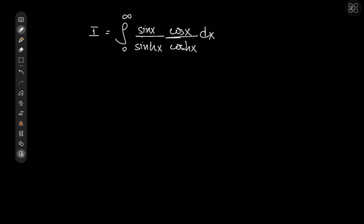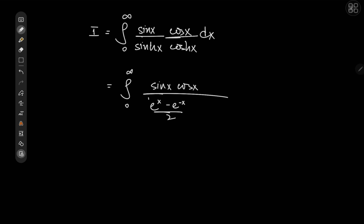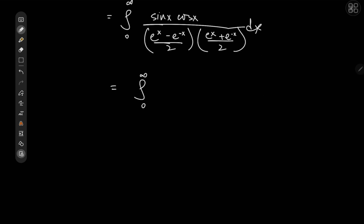I'll get straight to the solution. The first thing I'd like to do is expand the hyperbolic sine and cosine functions. We write this as the integral from zero to infinity of sine x times cosine x, over (e^x minus e^{-x})/2, multiplied by (e^x plus e^{-x})/2 for cosh. Notice that sine x times cosine x is actually one half of sine 2x. So we have one half of sine 2x divided by (e^{2x} minus e^{-2x}), invoking the identity (a minus b)(a plus b), divided by four, dx.